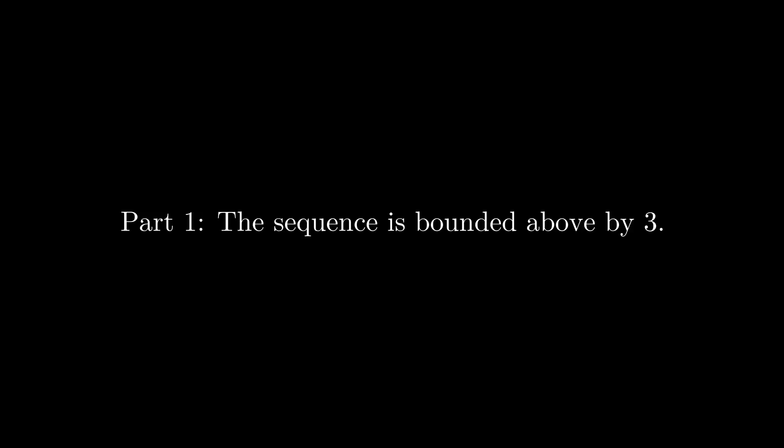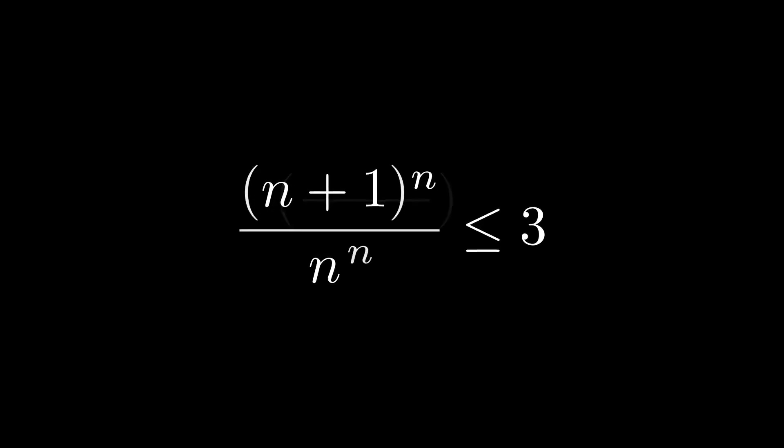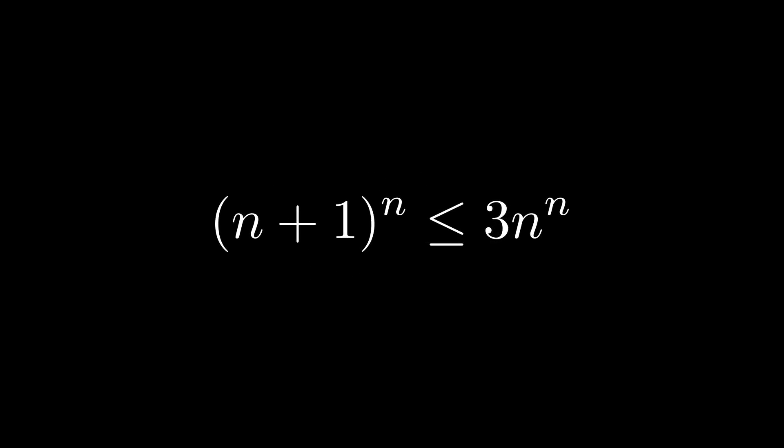Let's take a look at our first claim, that the sequence is bounded above by 3. The whole point of this video is to use counting arguments. So for this proof, we want to work with integers. Let's rearrange this inequality a bit. Notice that we can make this into an integer inequality because all the terms of our sequence are rational.